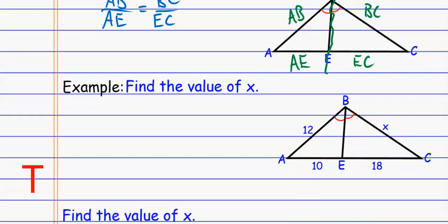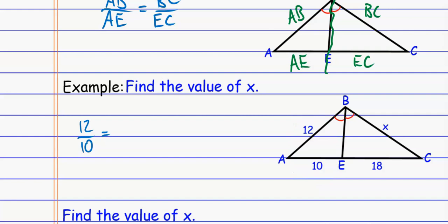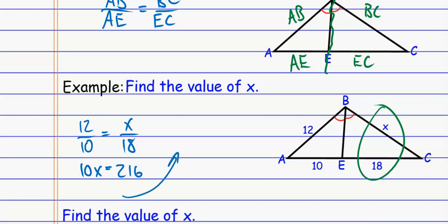For example, if I look at this — thinking of that angle bisector BE as separating the proportions: one proportion is 12 over 10 on one side, and the other proportion is X over 18 on the other side. Just make sure you do it in the same order — here I have the side over the piece, so the other one must also be the side over the piece. Cross multiplying gives 216, and dividing each side by 10 gives X = 21.6.